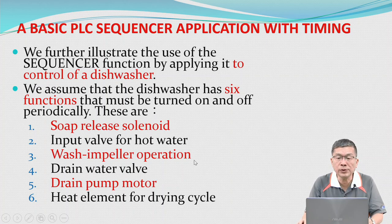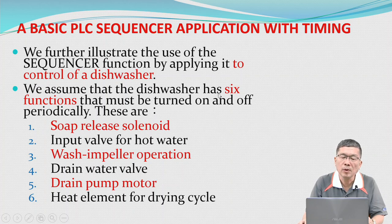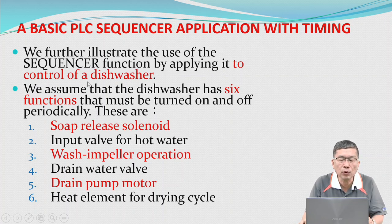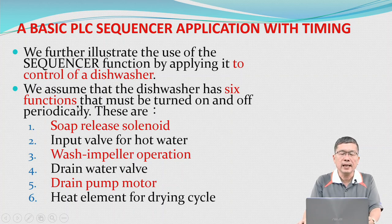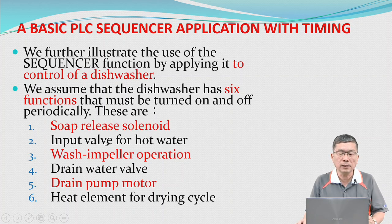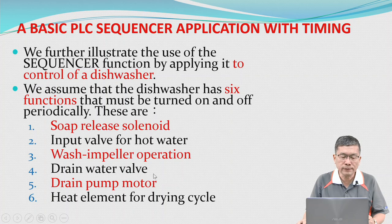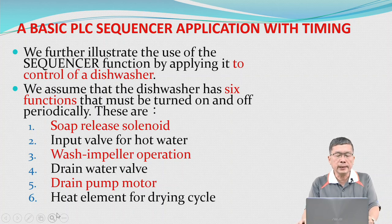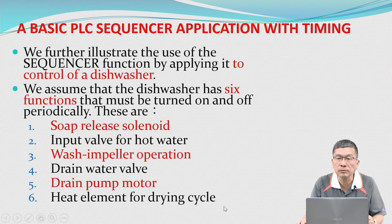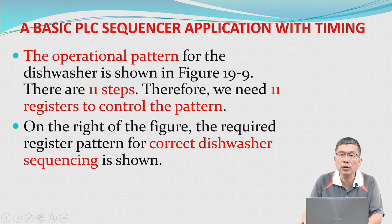A basic PLC sequencer application with timing. We further illustrate the use of the sequencer function by applying it to control of a dishwasher. We assume that the dishwasher has six functions that must be turned on and off periodically: swap release solenoid, input valve for hot water, wash impeller operation, drain water valve, drain pump motor, and heat element for drying cycle. The operational patterns for the dishwasher are shown in figure 19.9.